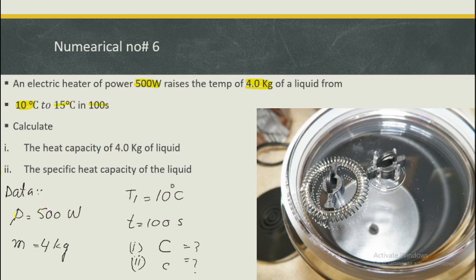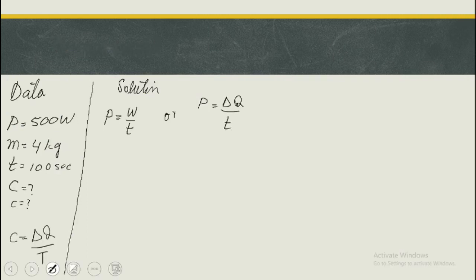Data form کیا: power ہمارے پاس 500 watts، mass ہمارے پاس 4 kg، first temperature 10 degree centigrade، second temperature 15 degree centigrade، اور total time consumed 100 seconds. What we have to calculate is the heat capacity and the specific heat capacity of the liquid.